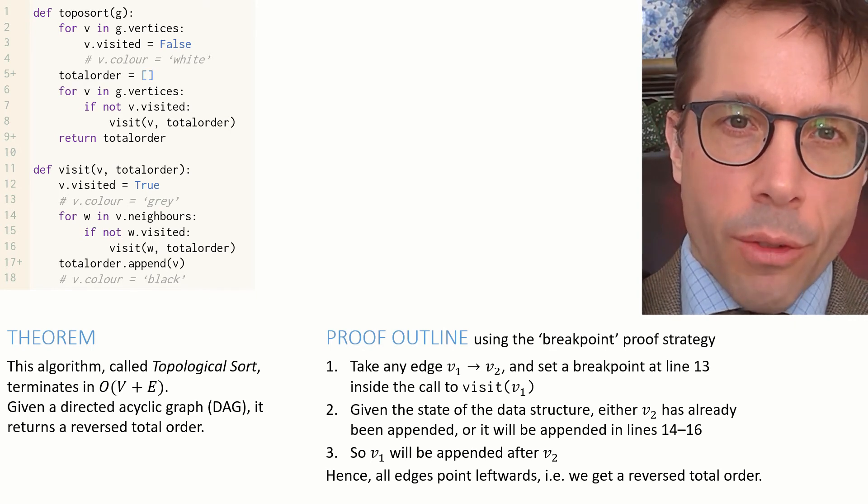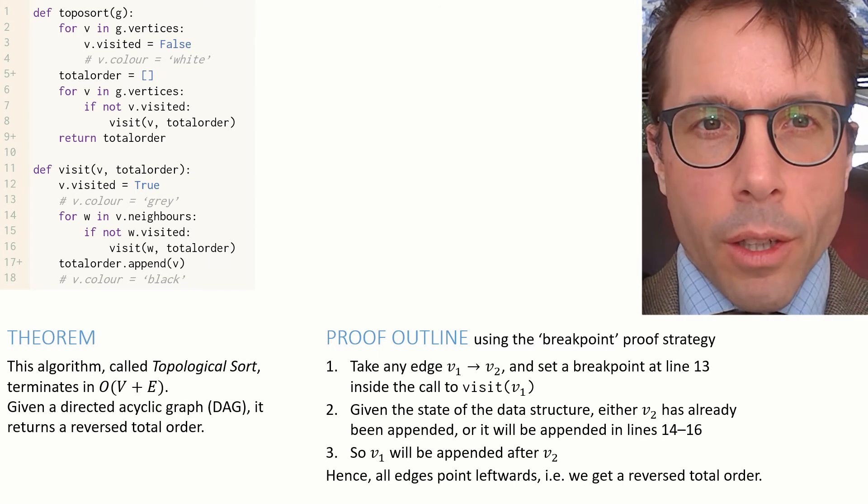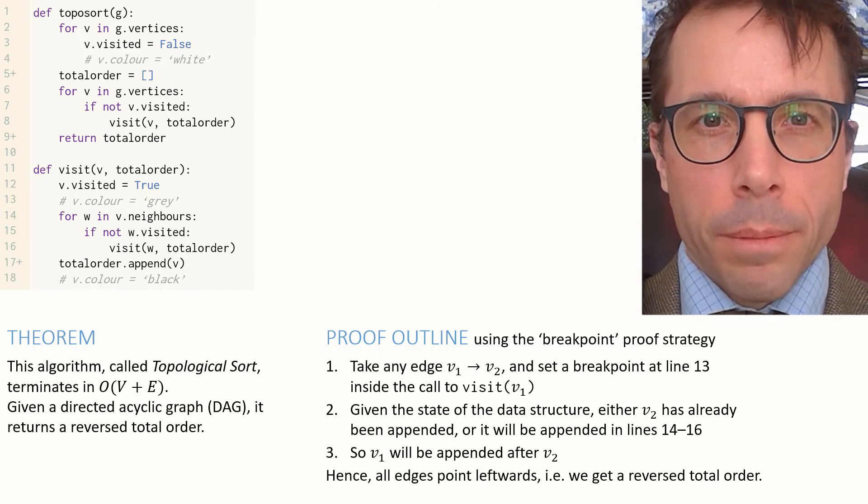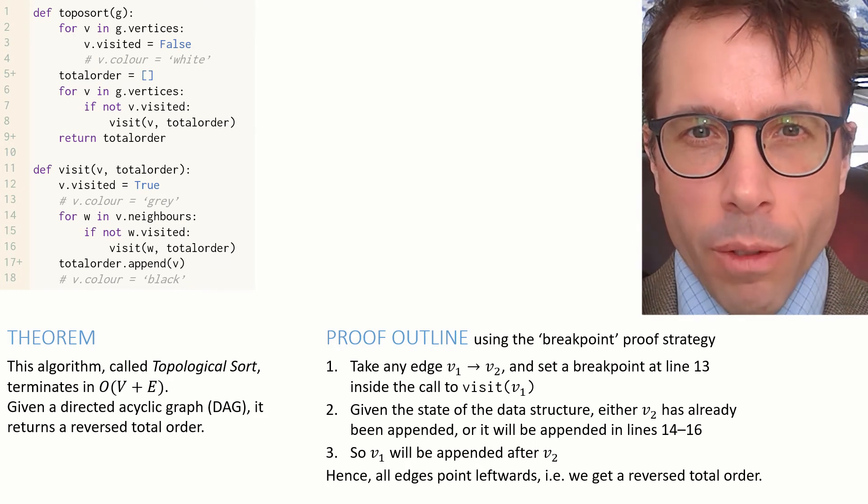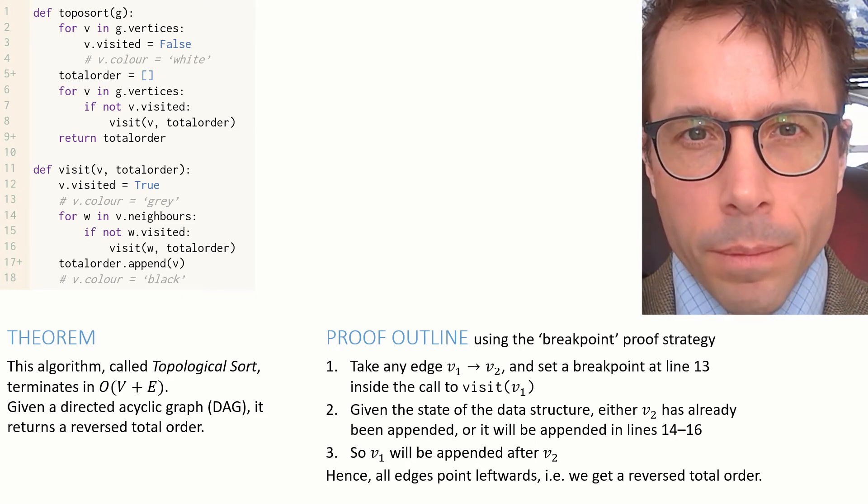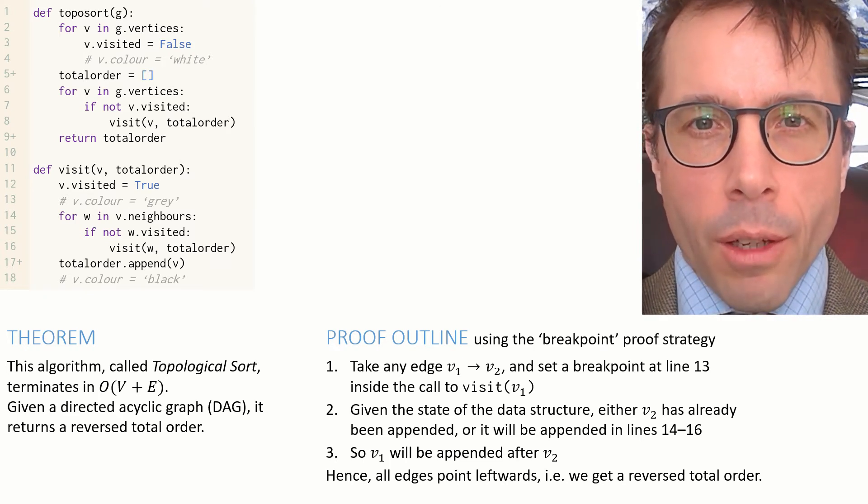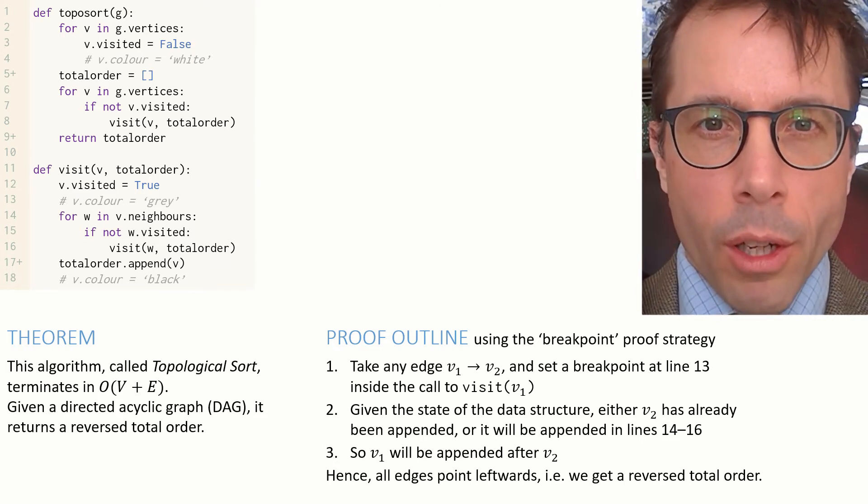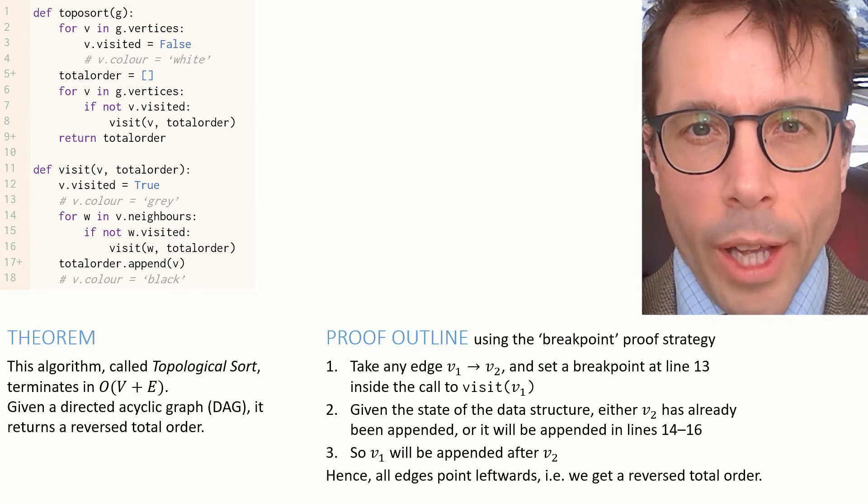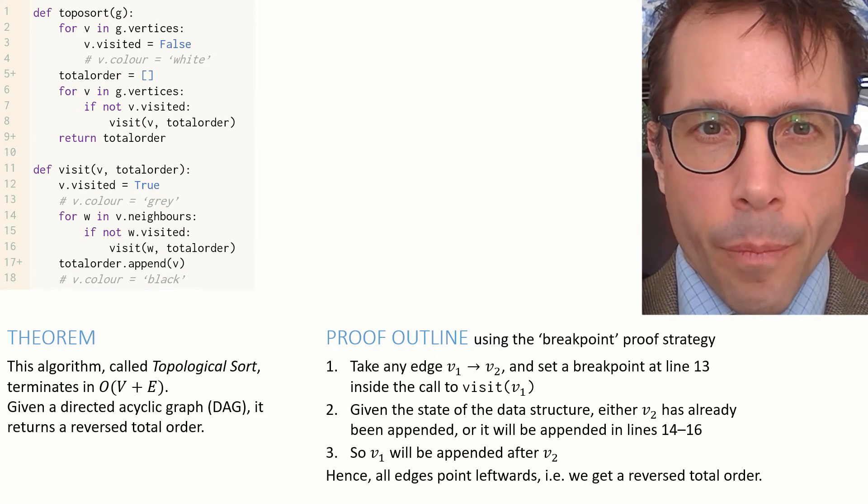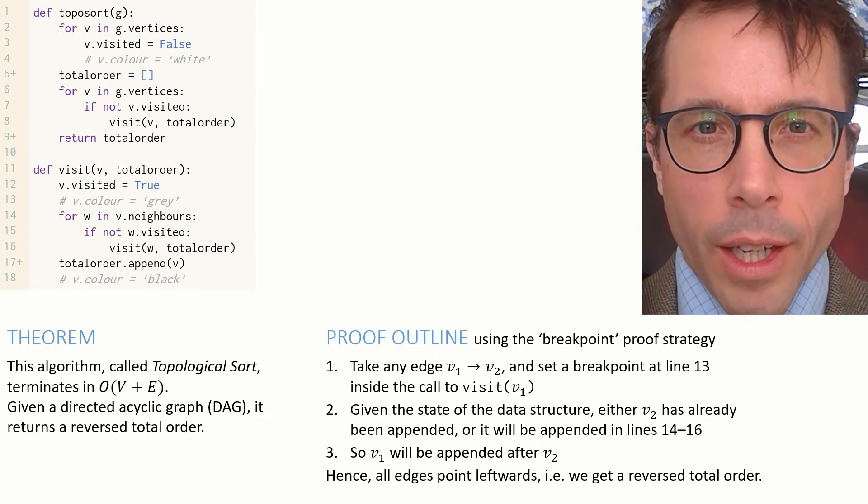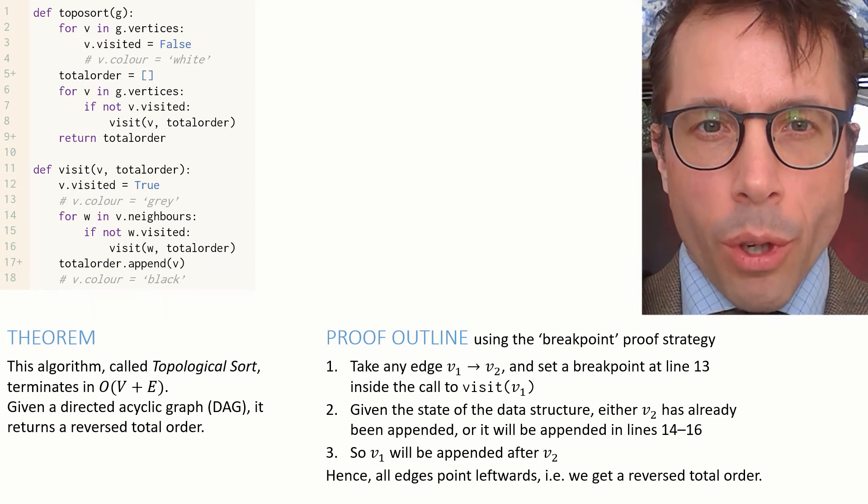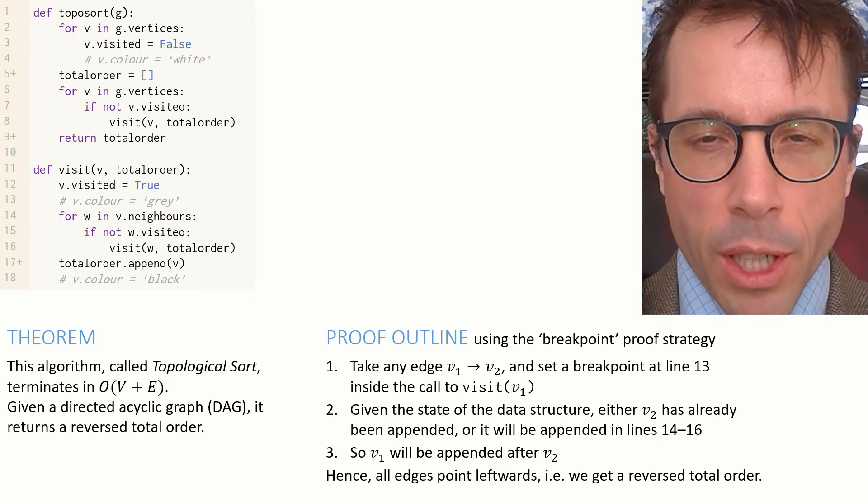I'm not going to go through the details of the proof in this video. I'm just going to talk through the outline, and I'll leave you to read all the details in the accompanying lecture notes. And remind you that the proof is examinable material. This proof is yet another breakpoint-style proof, but this time it's slightly simpler because there's no proof by induction needed. Let's consider an arbitrary edge in the graph - let's say v1 to v2. We want to argue that v1 and v2 will end up the right way around in our total order: v2 to the left of v1, so that all edges in our total order point leftwards. Let's set a breakpoint at line 13, at the instant where we've just started the call to visit v1.